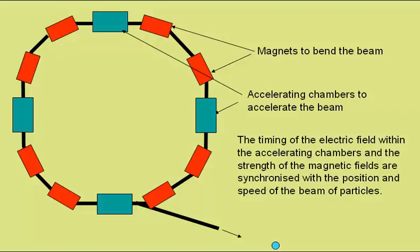The timing of the electric field within the accelerating chambers and the strength of the magnetic fields are synchronised with the position and the speed of the beam of particles. So the frequency of changing of the electric fields and the strength of the magnetic fields needs to increase as the speed of the particles increase. Hence the name synchrotron. It is synchronised.